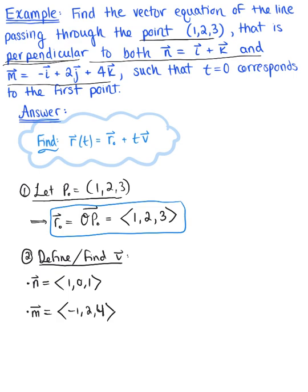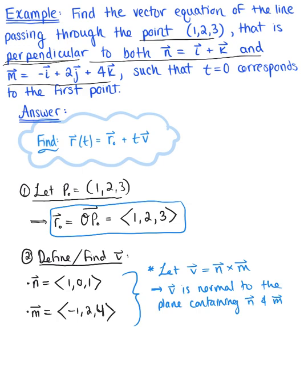Now the line needs to be perpendicular to these two. So how can we find a parallel vector that's perpendicular to these two vectors? Well by definition of the cross product, we know that if we let vector v be defined as the cross product of vector n and vector m, then vector v will be perpendicular to both of these vectors. So we can say that vector v is normal to the plane containing vector m and n, and thus it will be parallel to the line.